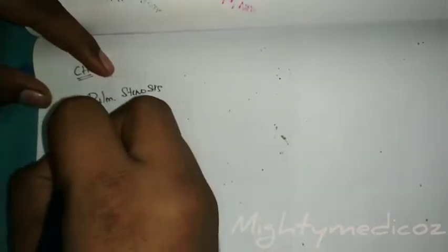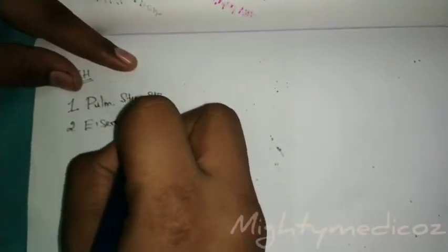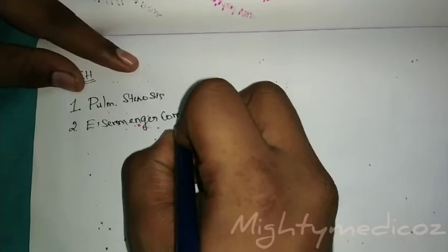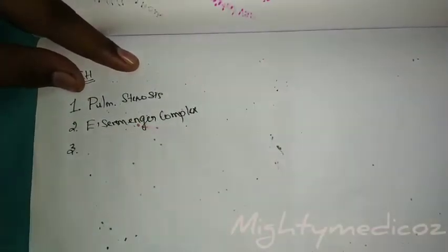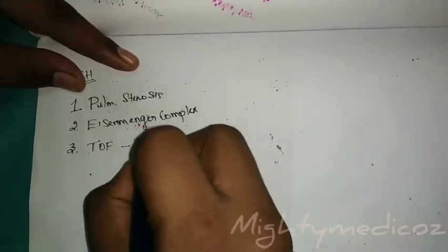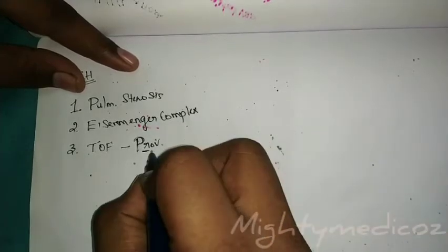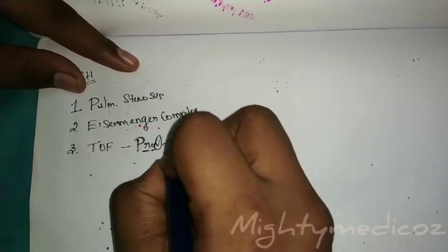What are the other congenital defects associated with VSD? The most common is pulmonary stenosis associated with VSD. Eisenmenger complex is the most common associated heart disorder. In Tetralogy of Fallot: P is pulmonary stenosis, R is right ventricular hypertrophy, O is overriding aorta, V is VSD.